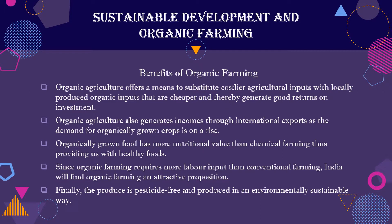Now the benefits of organic farming. In organic farming, you use organic inputs which are locally produced — chemical fertilizers and pesticides are not used. You use locally produced inputs which are much cheaper. So the agriculture inputs cost is reduced. This means the value of the crop is good, and you can get a good return on investment.